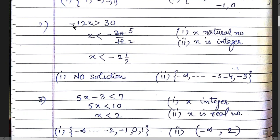Question 2: -12x > 30. When you shift the negative sign, the inequality sign changes — greater than is converted to less than, and less than is converted to greater than, whenever you shift a negative sign from one side to the other. The answer is x < -5/2, i.e., minus 2 and a half.